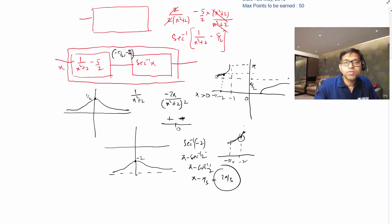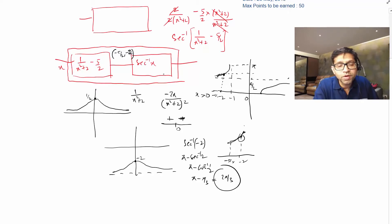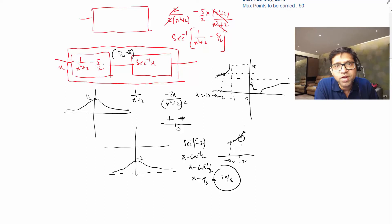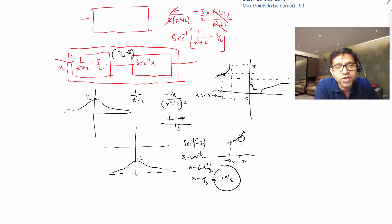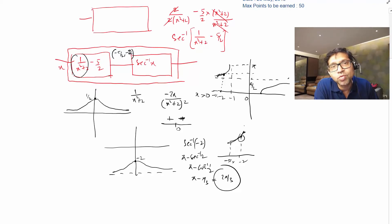So the key concept here: we split the problem into two parts using composition. The first part was simplifying and understanding how the graph of 1/(x² + 2) varies — its range goes from 0 to 1/2 — and then shifting it down by 5/2 to get the range of the inner function before applying secant inverse.